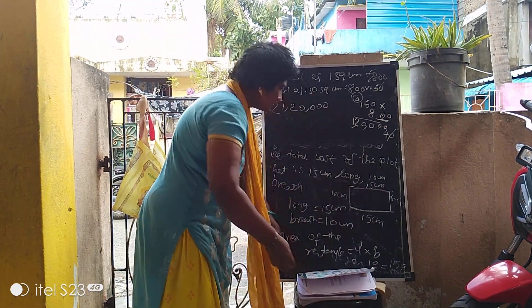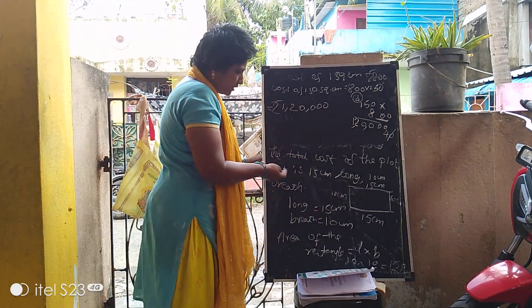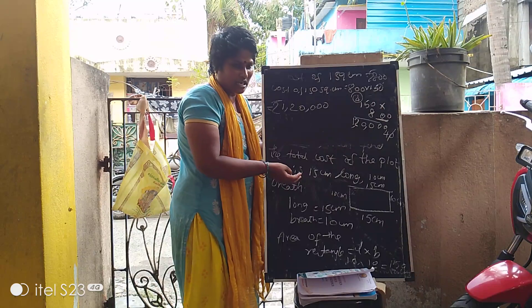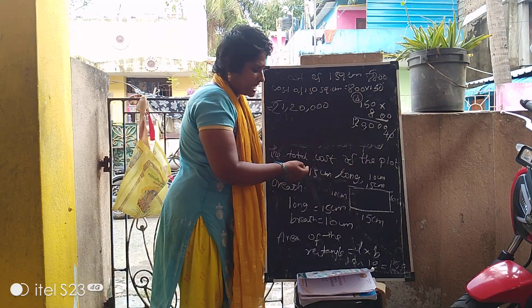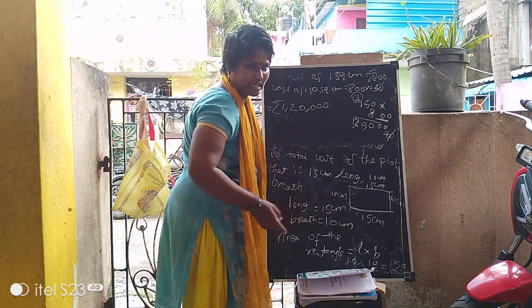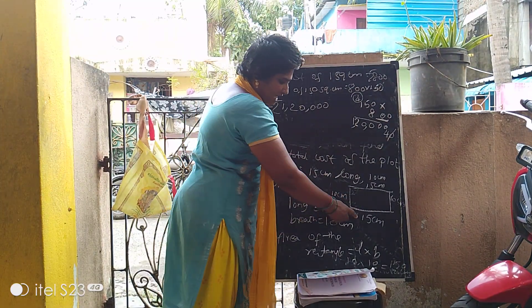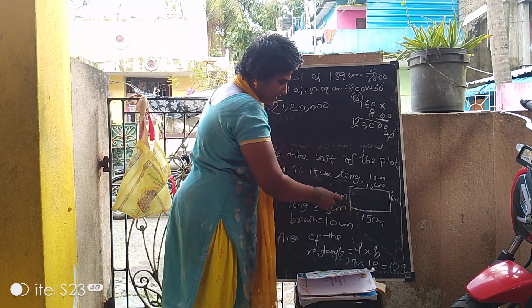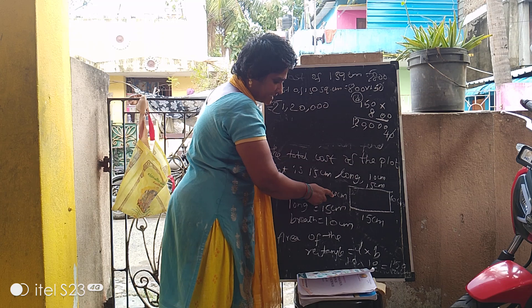So it is very simple. Area of the rectangle equals L into B. L is 15 cm, breadth is 10 cm.